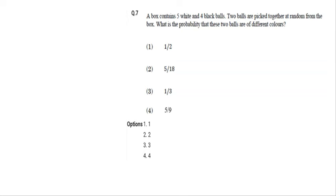The question is: A box contains 5 white and 4 black balls. Two balls are picked together at random from the box. What is the probability that these two balls are of different colors?